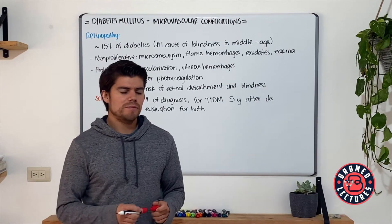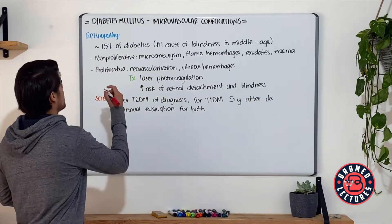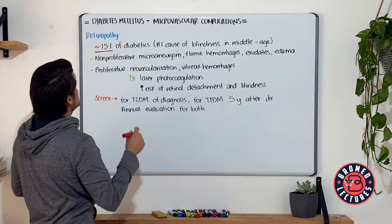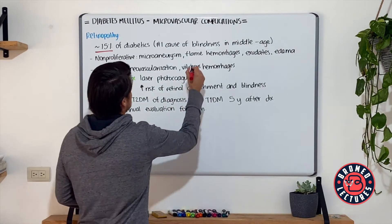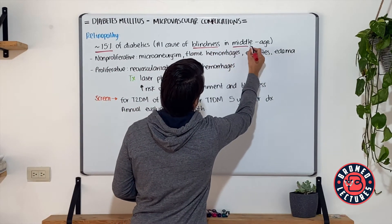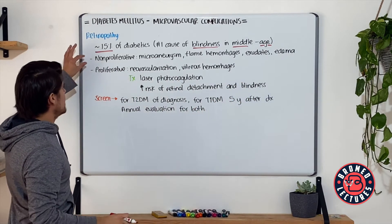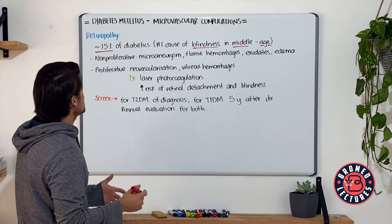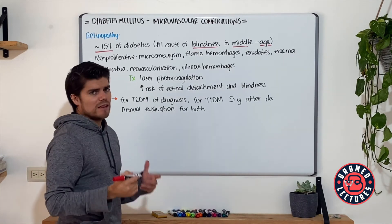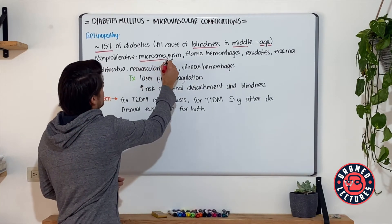Let's move on to retinopathy. This affects around 15% of diabetics. It is the number one cause of blindness in middle-aged patients, and this disease has two classifications. The first one is non-proliferative. This includes on slit lamp evaluation the microaneurysms.